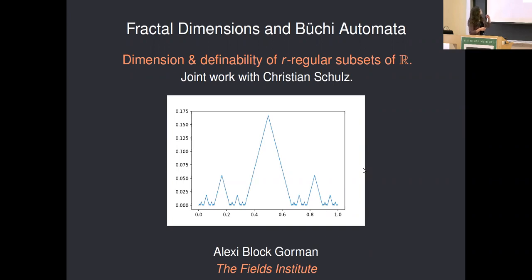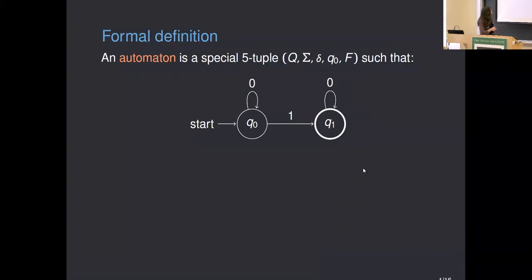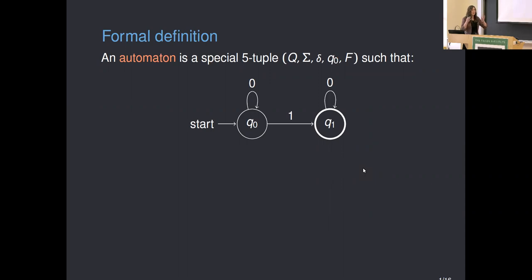I'm going to talk mostly about dimension and a little bit about definability of R-regular subsets of the reals, but also higher arity — so Euclidean space. Just to throw out the formal definition, because sometimes it's nice to see exactly what I'm talking about and then the heuristic.